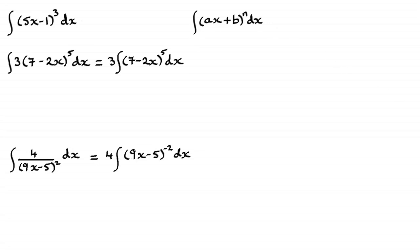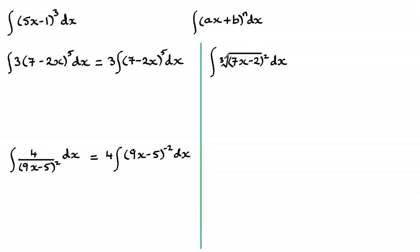We're not restricted to integrals like that. We could have an integral that involves cube roots. We've got here an example of the cube root of 7x minus 2 squared. That can be written in this form, because by index rules this is the same as 7x minus 2 to the power 2 thirds, so we can write it as that.